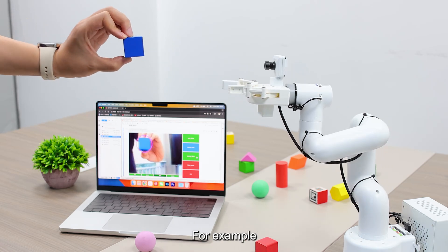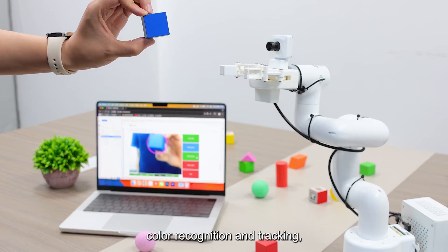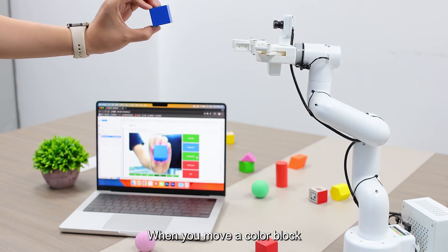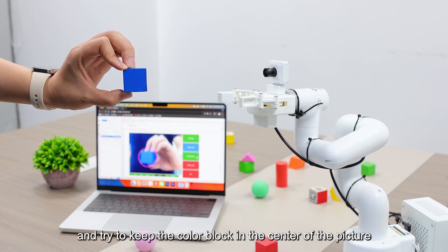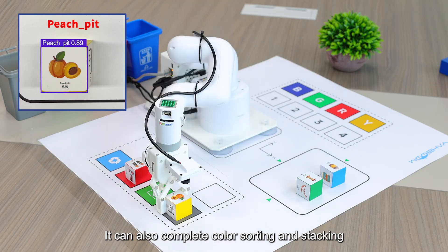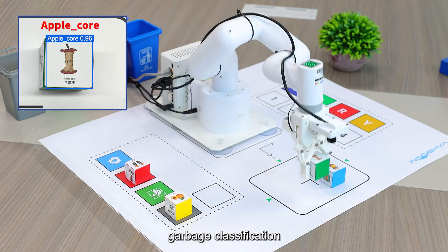AI visual interaction examples include color recognition and tracking. When you move a color block, the camera will follow the color block and try to keep the color block in the center of the picture. It can also complete color sorting, stacking, and garbage classification.